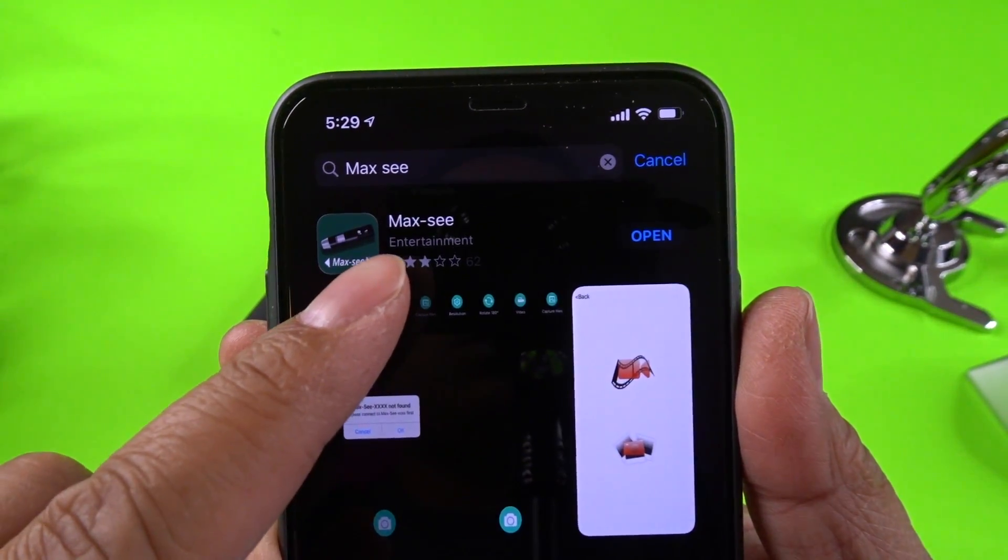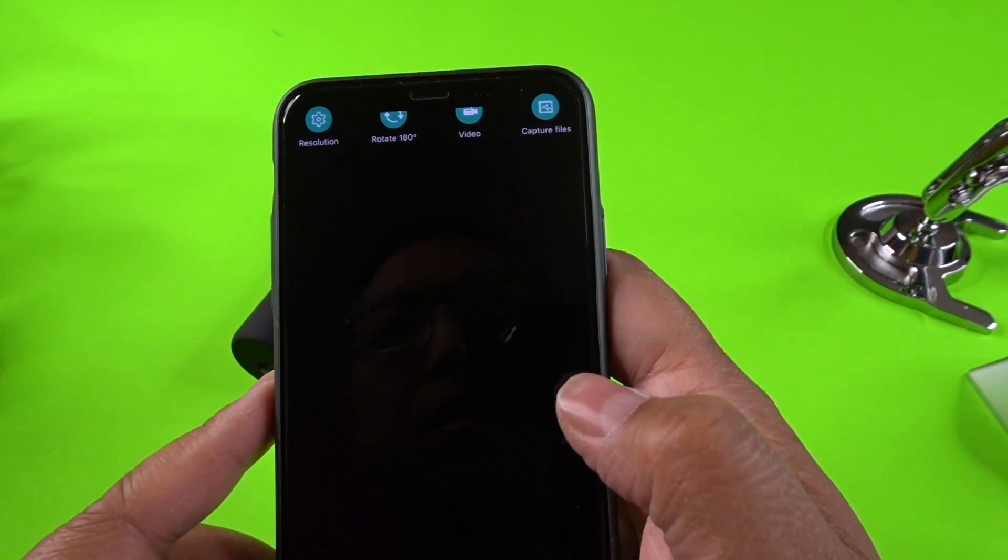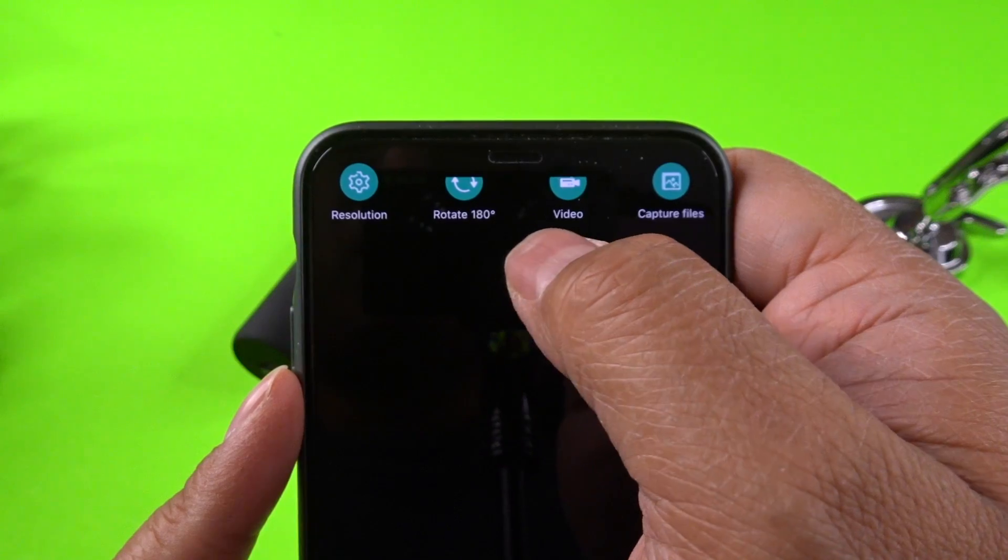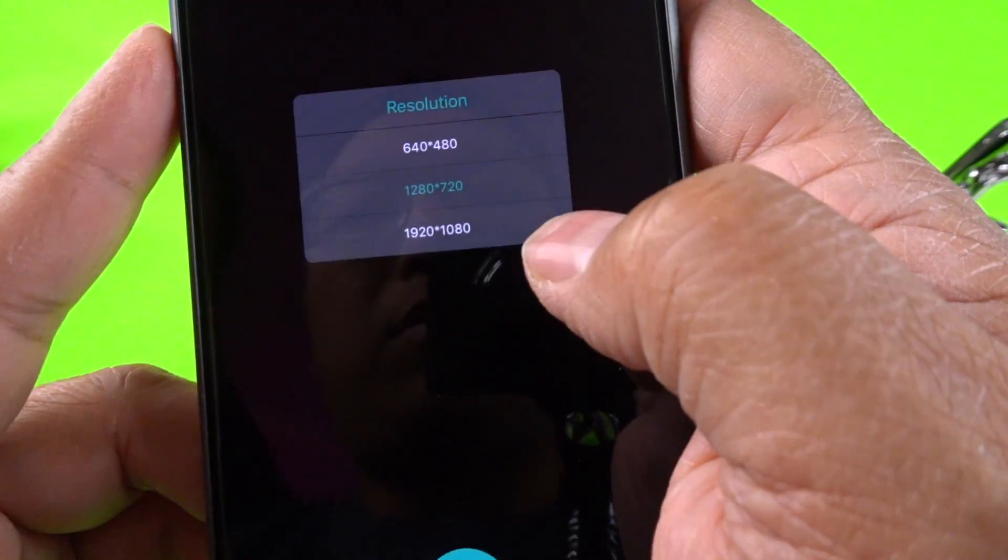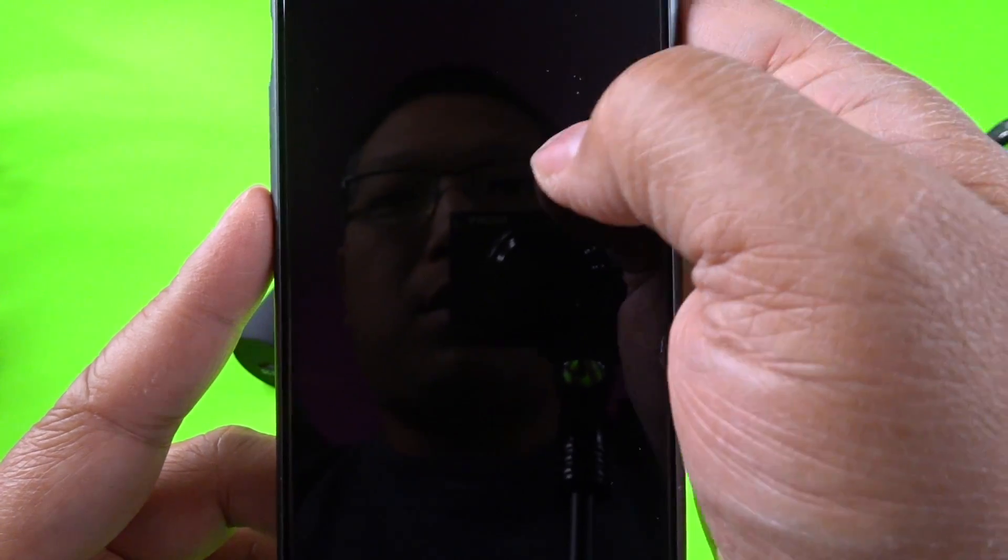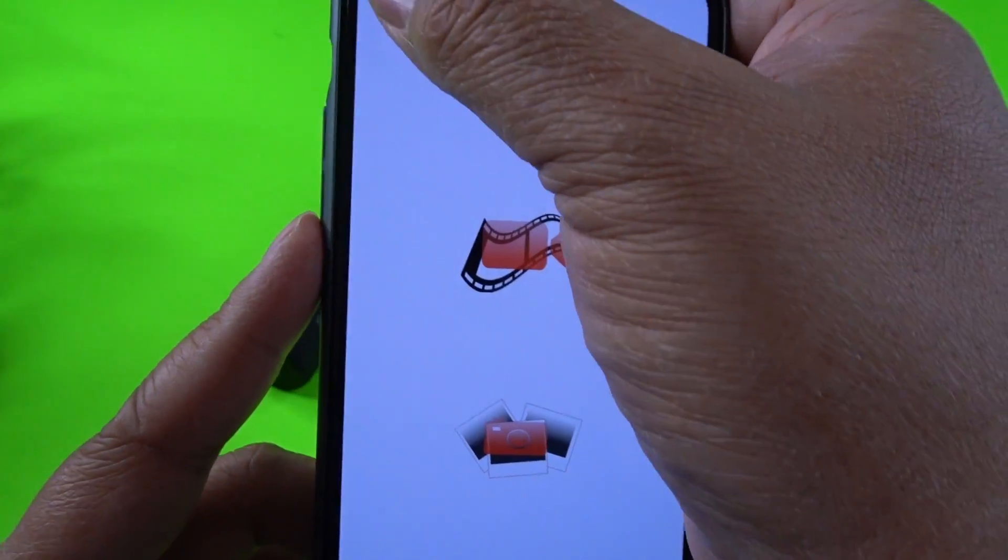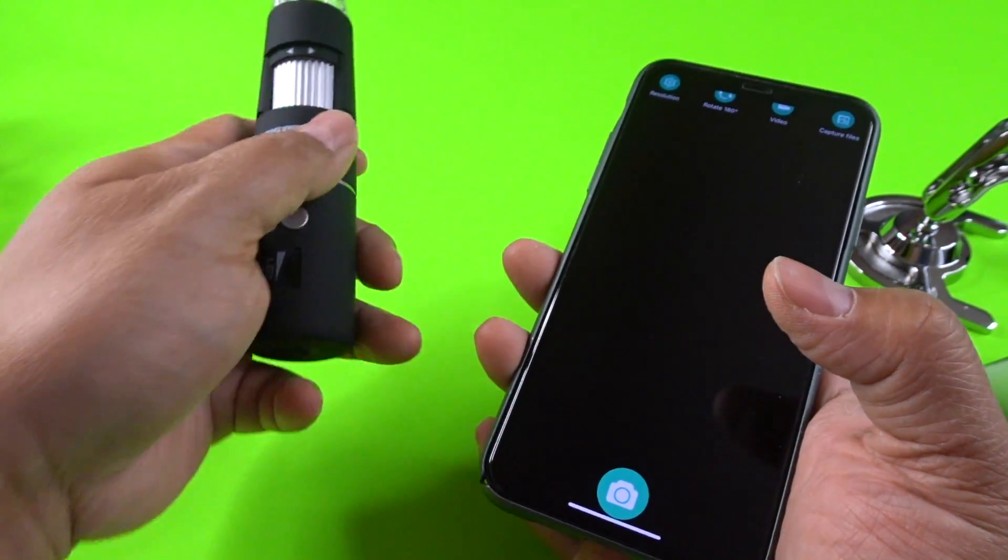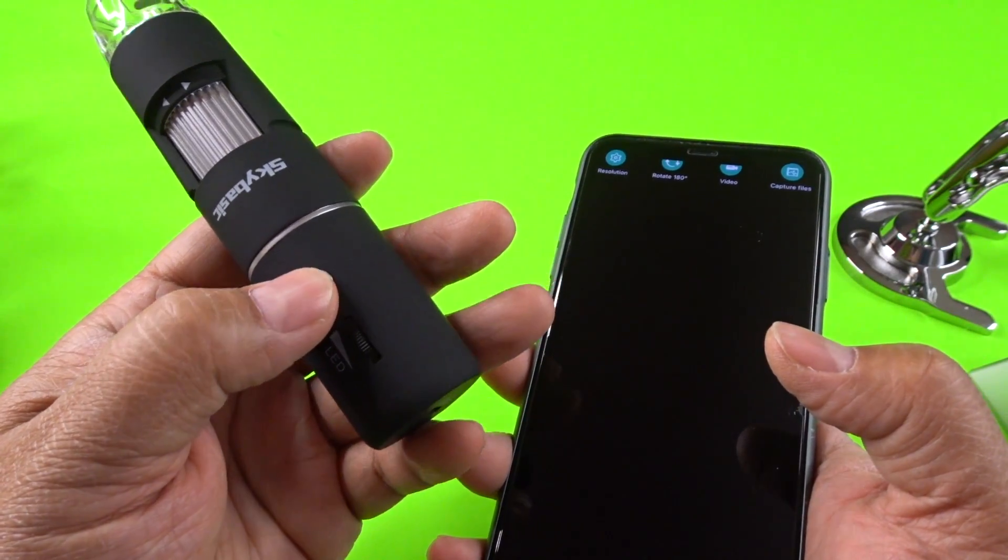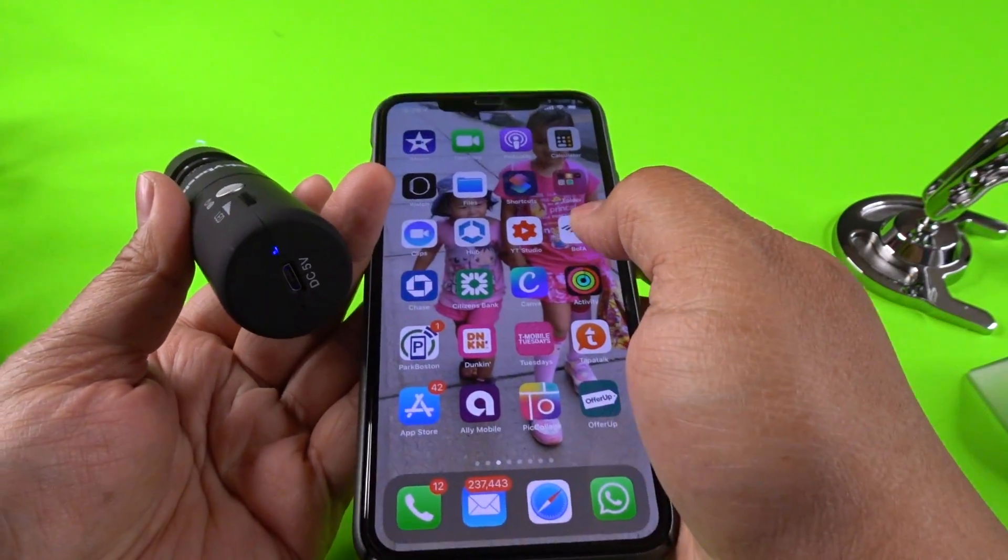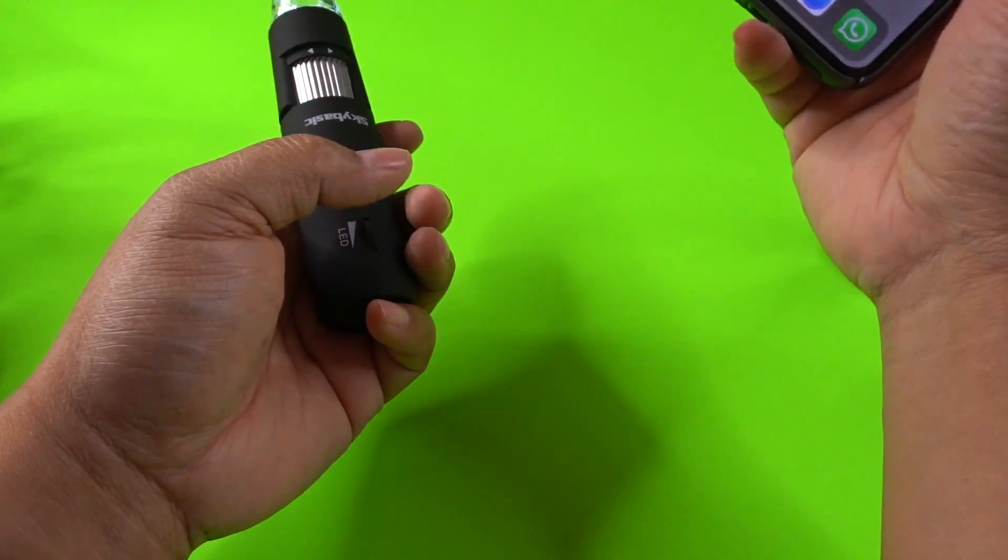Alright I've downloaded the app called Max C. I'm going to open it up and it looks plain. There's your options. Resolution. Rotate. Video. Capture files. If you go to resolution it's set to 720. Let's go to 1080. Okay so let's turn this on and connect. So I'm going to long press the power button. And the lights come on. So now I'm going to go to my wi-fi settings. So I'll be right back. Let me just connect it.